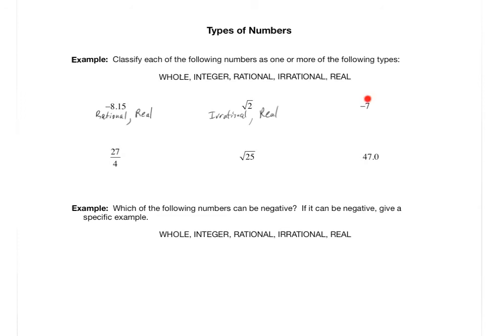Negative 7 is not a whole number because whole numbers aren't negative. However, it is an integer — there's no decimal expansion, or it would be negative 7.0. If it's an integer, thinking back to the Venn diagram, it's also rational because the integer bubble is inside the rational bubble, and that means it's also real because the rational bubble is inside the real bubble. So negative 7 is an integer, rational, and real.